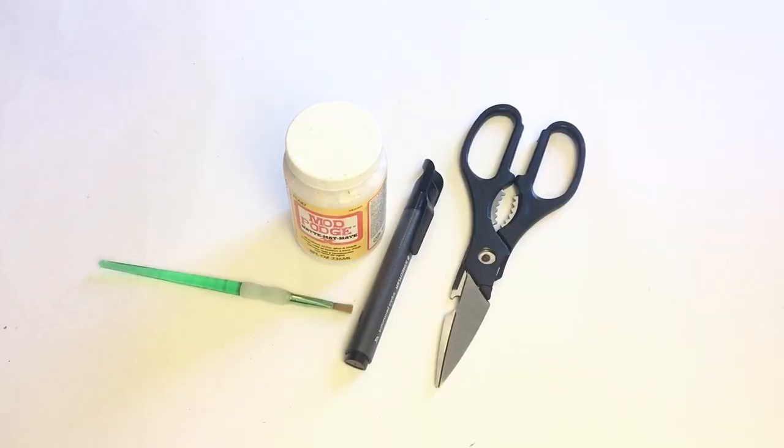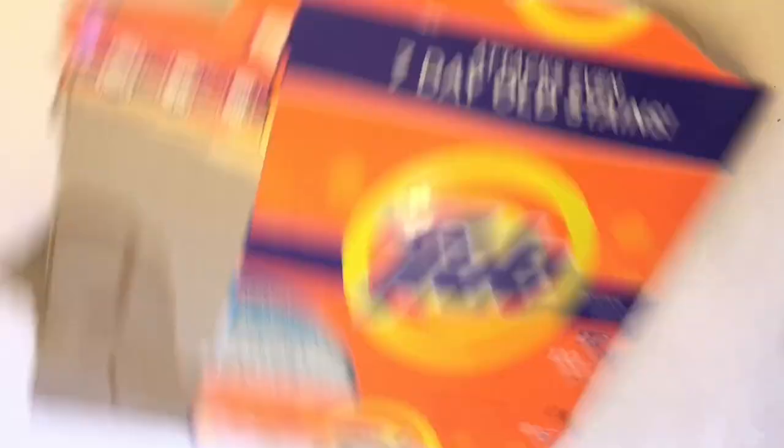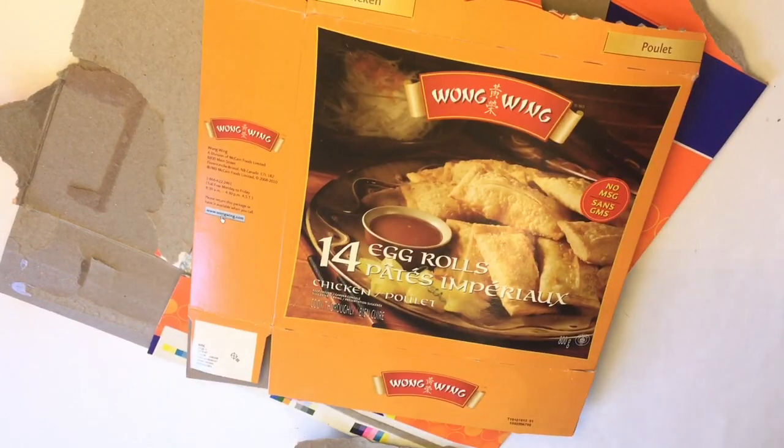For this project, you will need scissors, a permanent marker, some type of glue, a pencil, a ruler, or something with a straight edge. Next, you will need cardboard that you have laying around your house. Colorful is best.